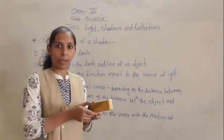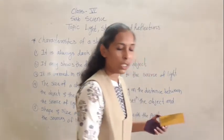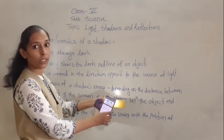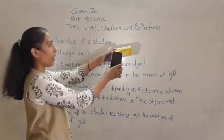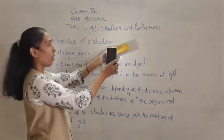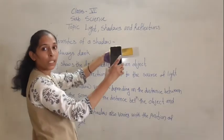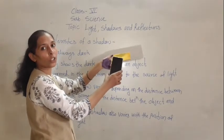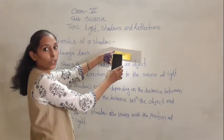See here, I have this duster and one source of light — a mobile torch. So this is the source of light, and you can see the shadow of the duster formed here. The source of light is on this side, the opaque object is here, and the shadow has formed on the backside of that opaque object. So the shadow is always formed in the direction opposite to the source of light.